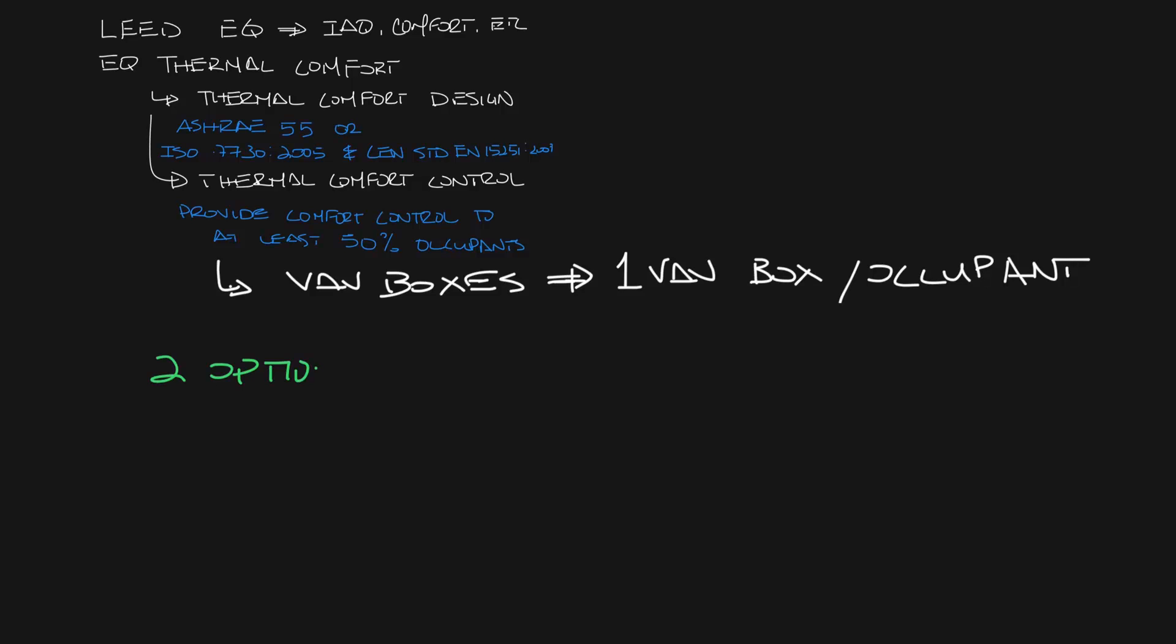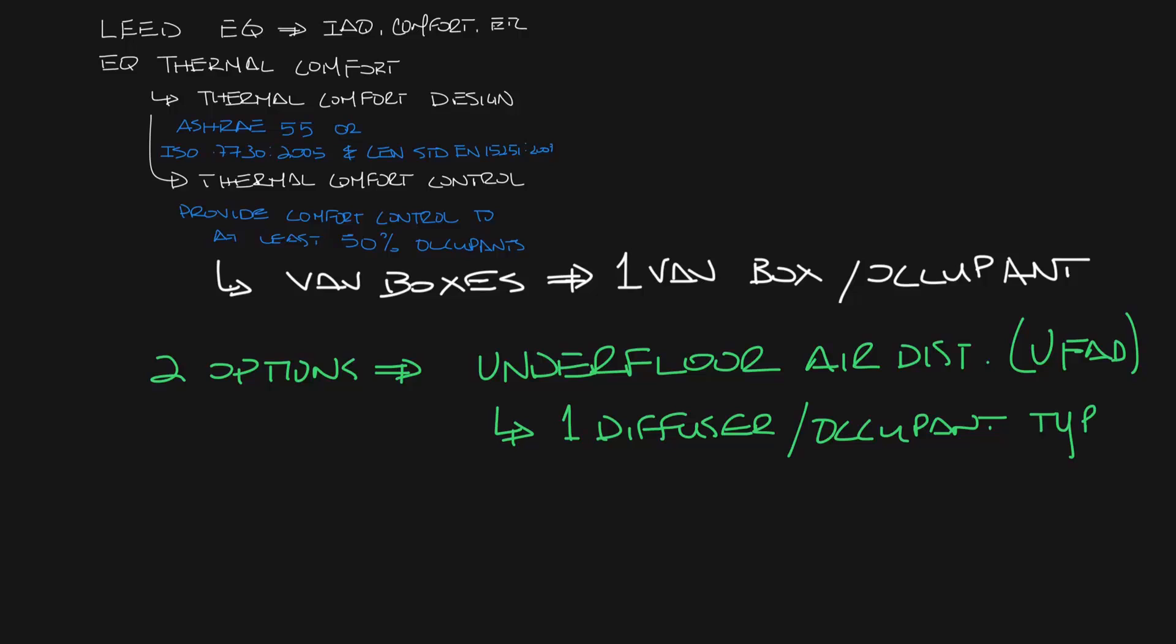But there are two other systems that can be used to achieve this credit. The most common system to achieve this credit is Underfloor Air Distribution. A typical UFAD system has one diffuser per occupant, and the diffusers can be user-adjustable.